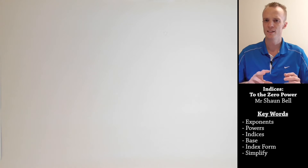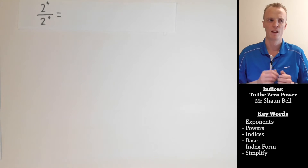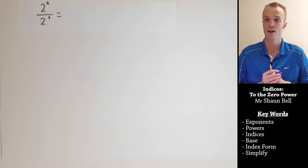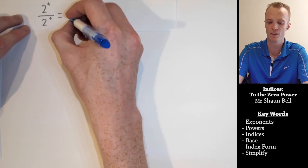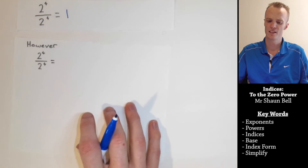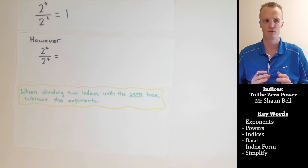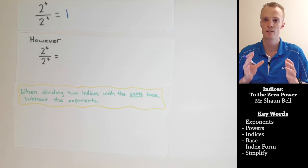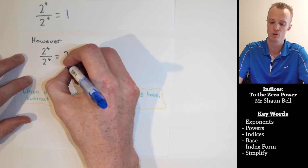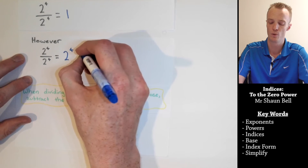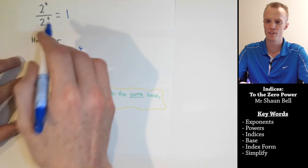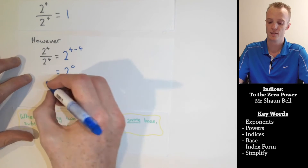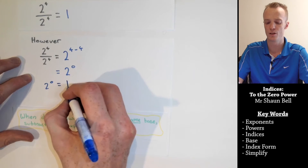Now you might be wondering what those two rules have to do with the power of zero. Consider this problem: two to the fourth power divided by two to the fourth power. We're dividing the same number by itself, so we know that equals one. However, if we apply the rule for dividing indices with the same base and subtract the exponents, we get two to the power of four subtract four, which is two to the zeroth power. But we already know this statement equals one, so two to the zeroth power must also equal one.